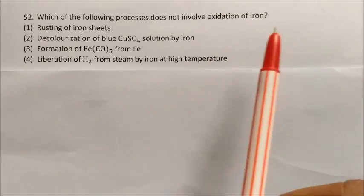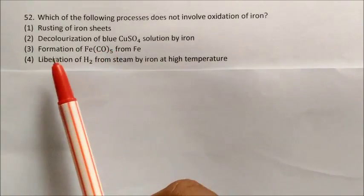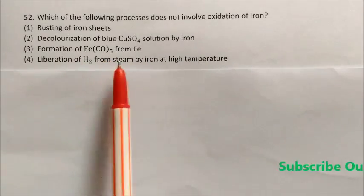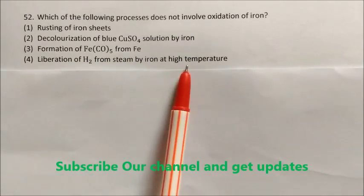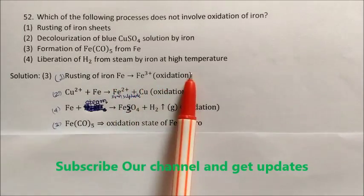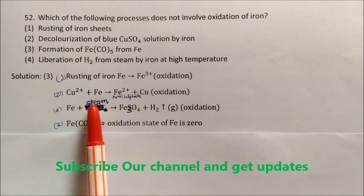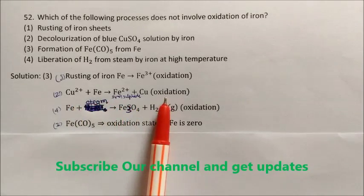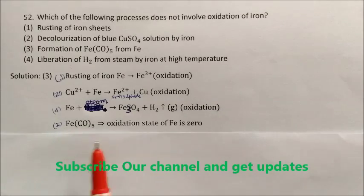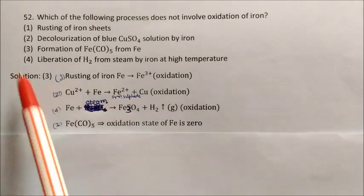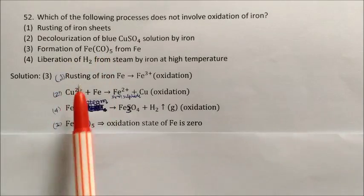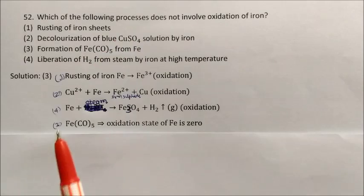Question: Which of the following processes does not involve the oxidation of iron? Rusting of iron — iron converts to +3 oxidation state, so oxidation occurs. CuSO4 in presence of iron — iron is more reactive, converts Cu2+ to Cu, also oxidation. Iron + steam → Fe3O4 + H2 — also oxidation. But in formation of iron pentacarbonyl, Fe(CO)5, the oxidation state of iron is zero and CO is neutral, so there is no change in oxidation state. Answer is option 3, formation of iron pentacarbonyl.